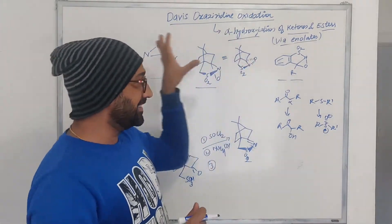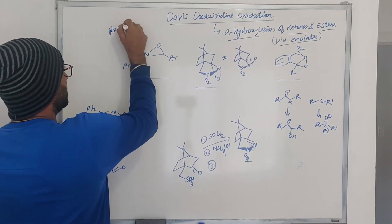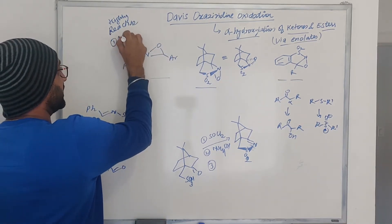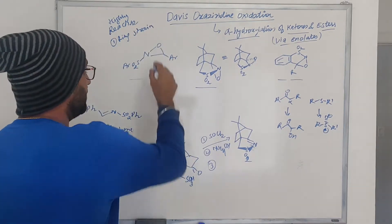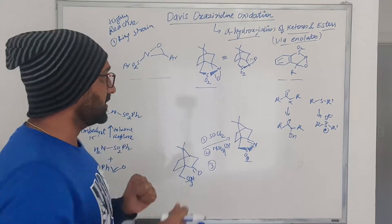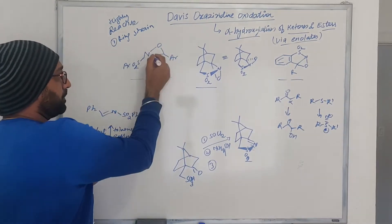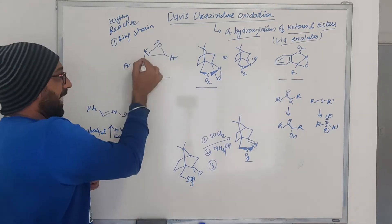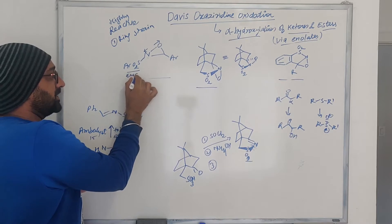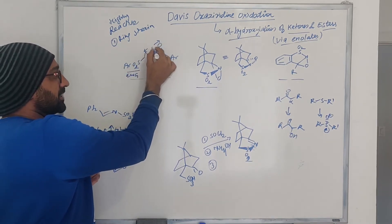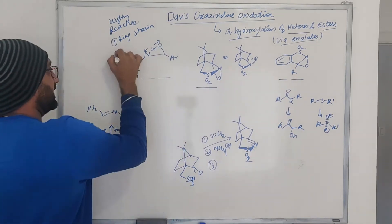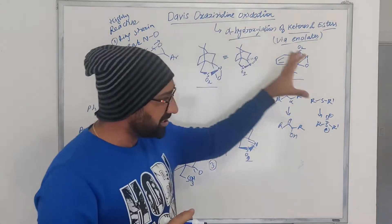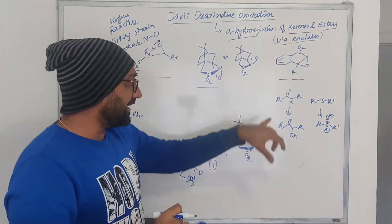What makes these compounds so reactive? First, it is the ring strain — oxaziridine is a three-membered ring which brings a lot of strain into the system. Apart from that, there is the nitrogen-oxygen bond: nitrogen being electronegative pulls electrons towards itself, oxygen being electronegative pulls electrons towards itself. On top of that, there is an electron-withdrawing group attached to nitrogen, pulling electrons further. As a result, the nitrogen-oxygen bond becomes very weak and can be easily cleaved under reaction conditions, making it a reagent of choice for alpha hydroxylation.